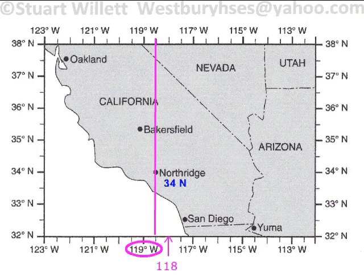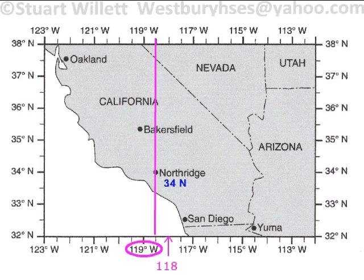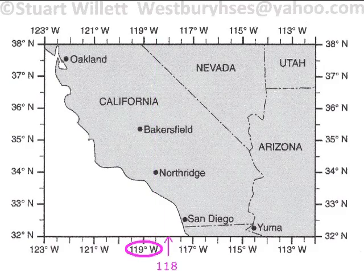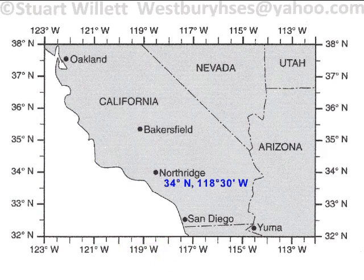Degrees, just like minutes, there are 60 of them because you're dividing up a circle — a circle has 360 degrees. Half of 60 degrees would be 30 degrees, just like half an hour is 30 minutes. So I would say this is 118 degrees 30 minutes west. Our latitude and longitude: 34 degrees north, 118 degrees 30 minutes west.